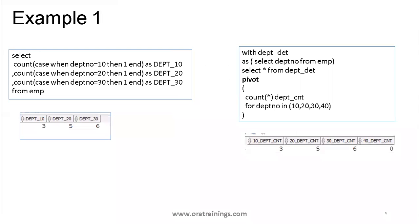Let us get into the first example. On the left side I've written an example without using pivot; on the right side, with pivot. We just want to understand how to use pivot — not the advantage yet. The functionality I want to achieve is to display the number of employees in each particular department using the EMP table.